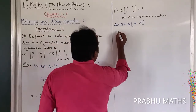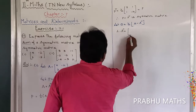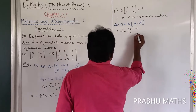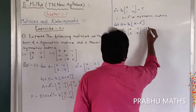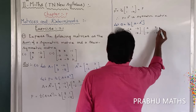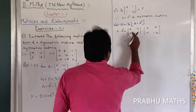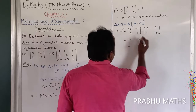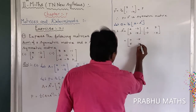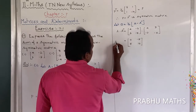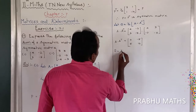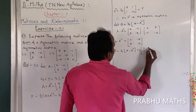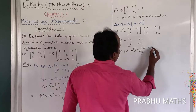Find the value of A minus A transpose. That is [[4, -2], [3, -5]] minus [[4, 3], [-2, -5]]. So: 4 minus 4 is 0, minus 2 minus 3 is minus 5, 3 minus minus 2 is 5, and minus 5 minus minus 5 is 0. So Q is equal to 1/2 into [[0, -5], [5, 0]].